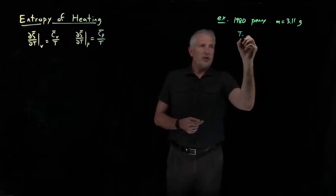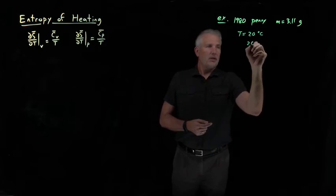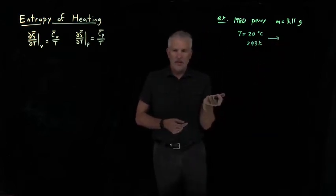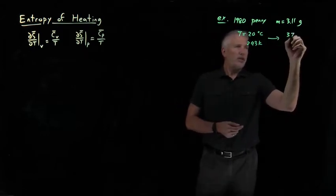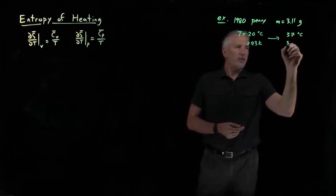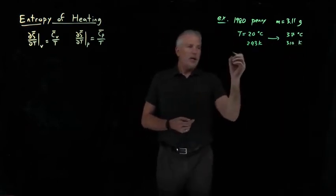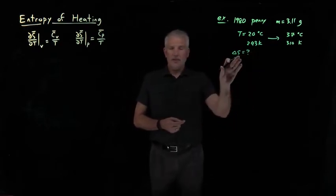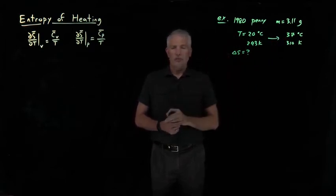So let's say I pull a copper penny out of my pocket. The initial temperature is 20 Celsius or 293 Kelvin, and I'm going to hold it in my hand until it heats up to body temperature. So at that point, it's reached 37 Celsius or 310 Kelvin.